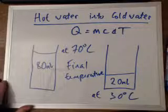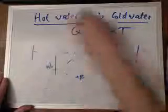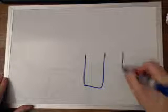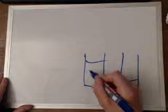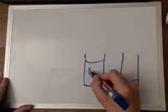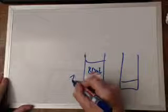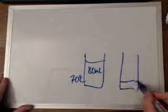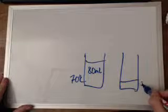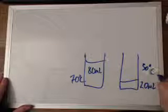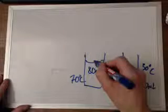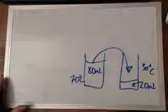Let's rub this off and get on with it. Now I'm going to draw the beakers again over here. We have two beakers of water: 80 milliliters at 70 degrees C and 20 milliliters at 30 degrees C. That is going to be poured into there. The theory is here.